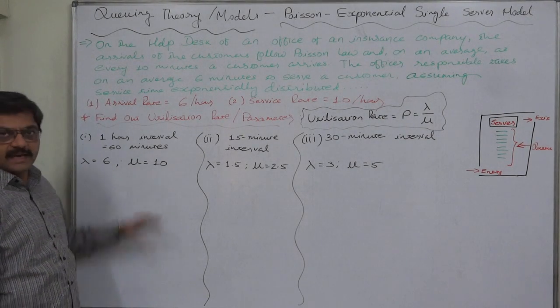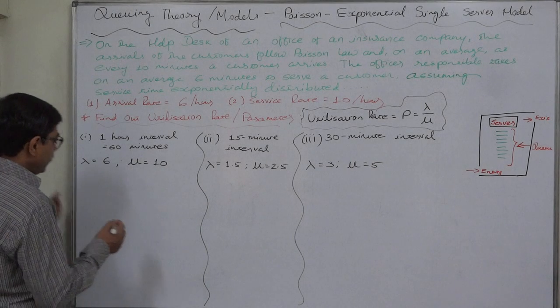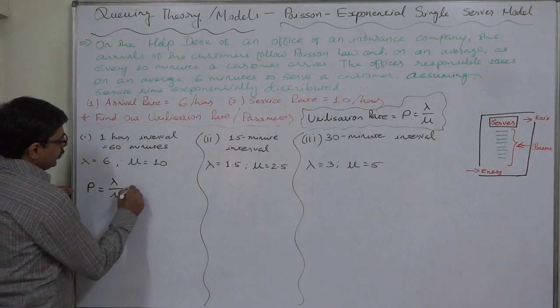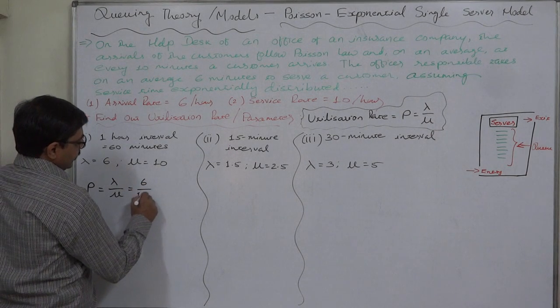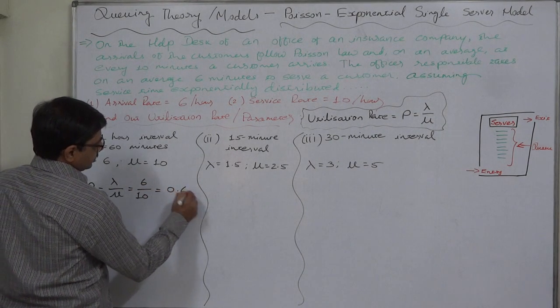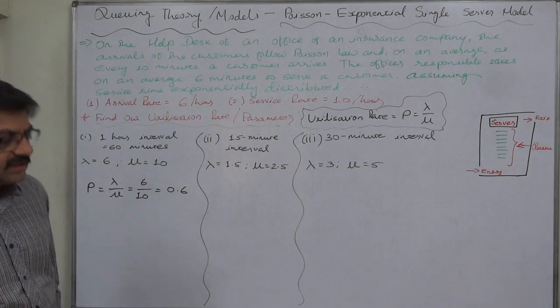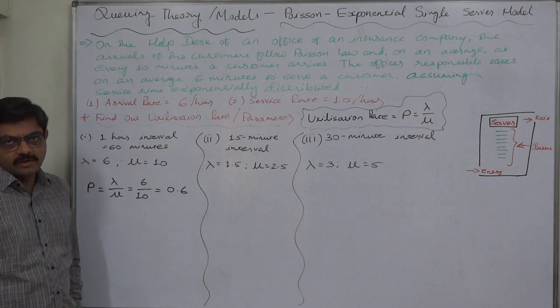So the utilization rate rho will be lambda by mu, equals to 6 by 10, equals to 0.6. Or we can say that at present, 60 percent capacity of the server is used. Now, if we change the unit of time, the magnitude remains the same, because this is nothing but a game of simple proportion.